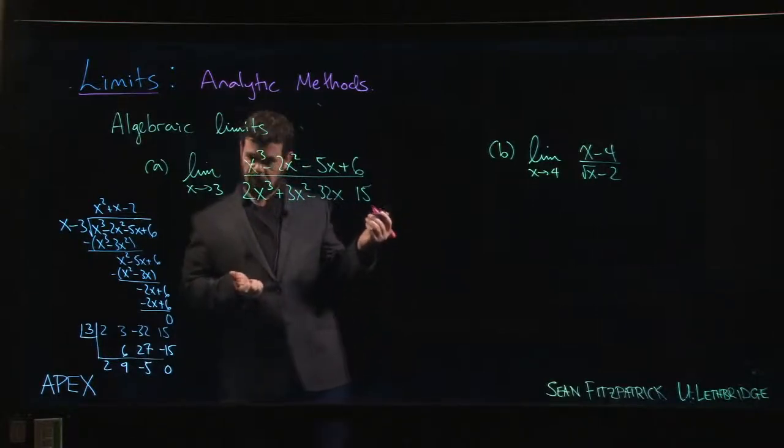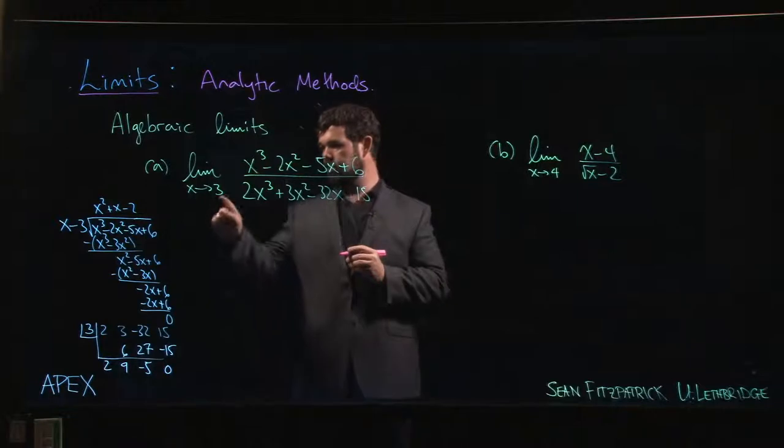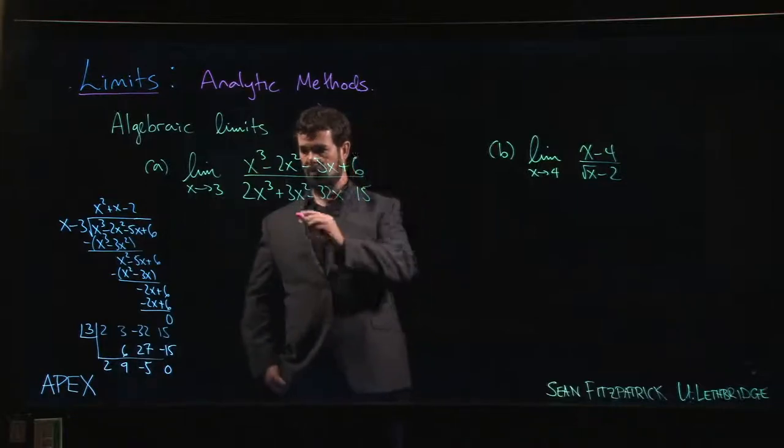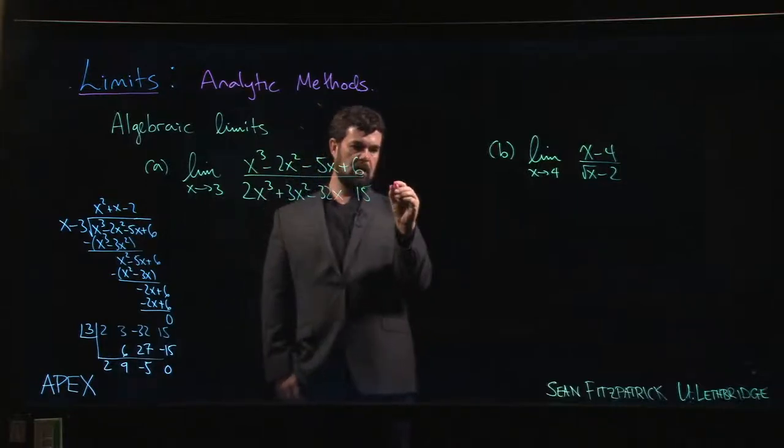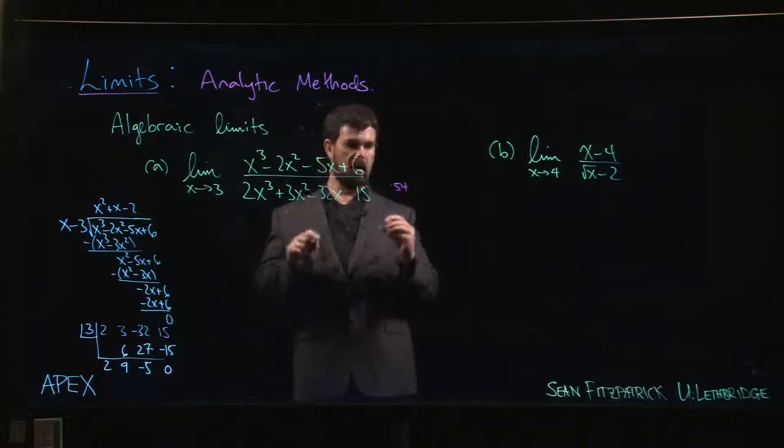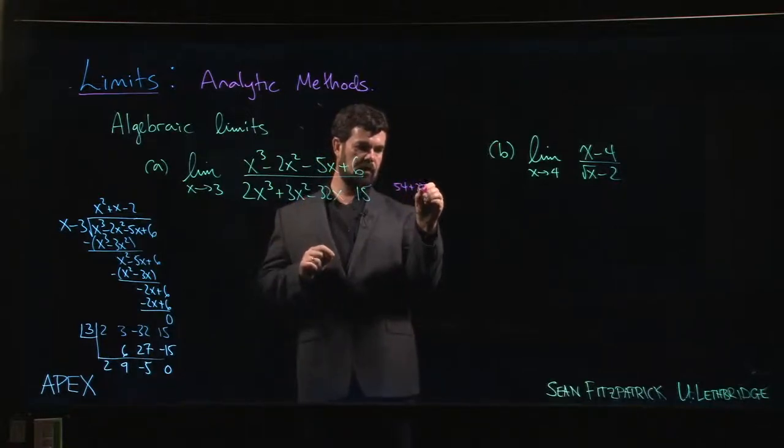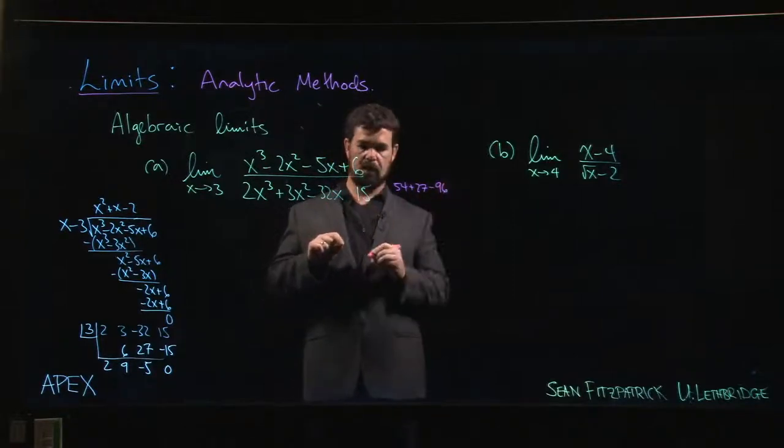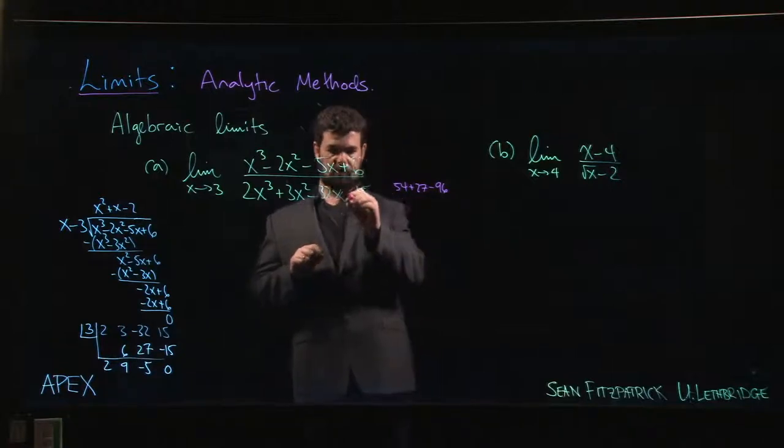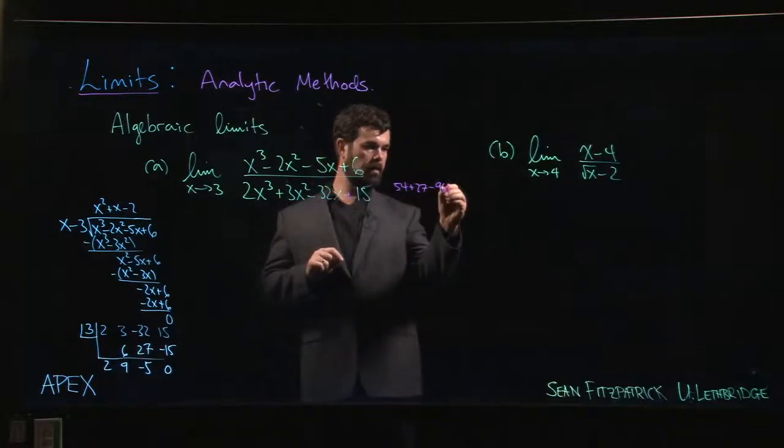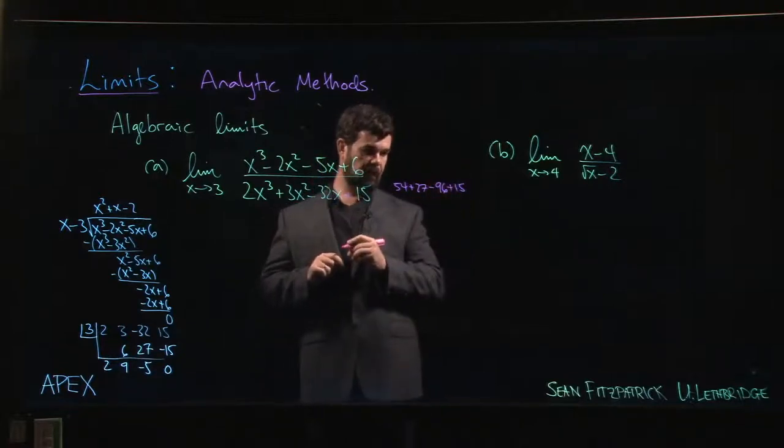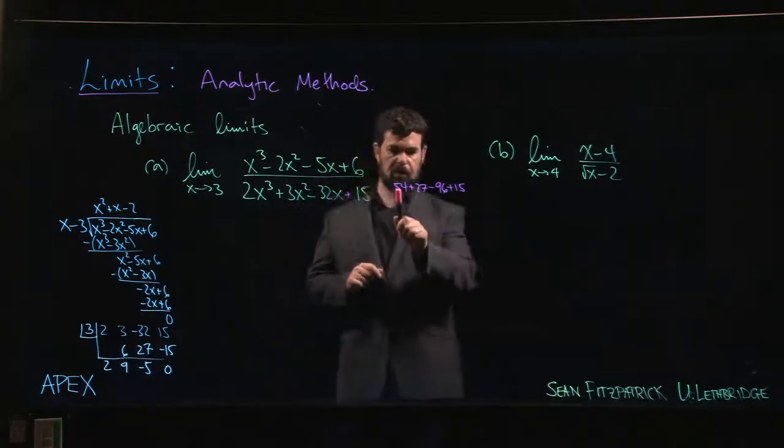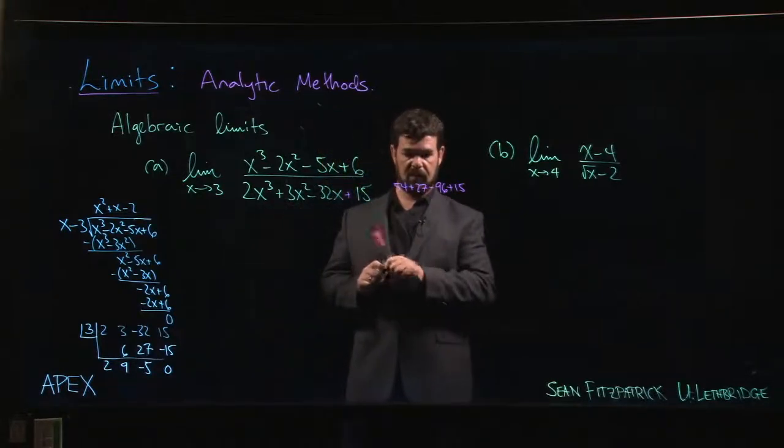So we might check that first. What happens when we put x equals 3 in the denominator? So 3 cubed is 27, times 2 we have 54, 3 times 9 so we get plus 27, minus 32 times 3 so minus 96, and oops there's a plus sign missing there, plus 15. Okay, so let's see, 54 and 27 adds up to 81, plus 15 is 96, minus 96...